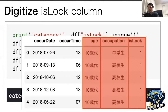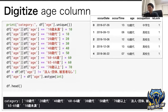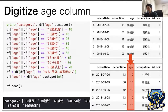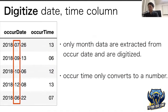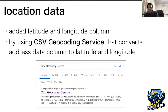Age and occupation are digitized in the same way — check the category, replace the category, and digitize. For the occur date, only month data is extracted and then digitized. For occur time, it is simply converted to a number. I also added latitude and longitude columns by using a geocoding service that converts address data to latitude and longitude.